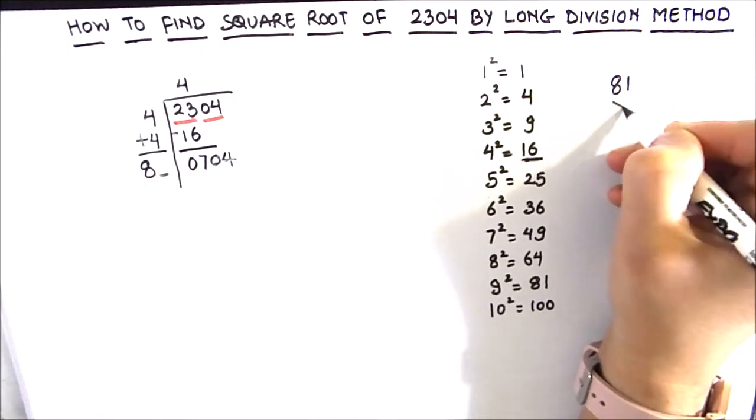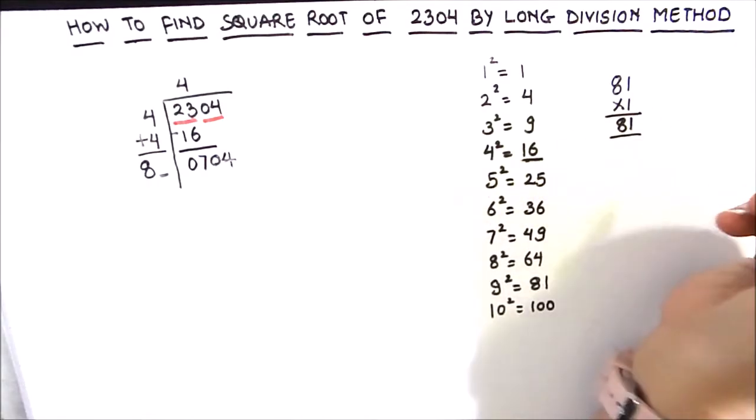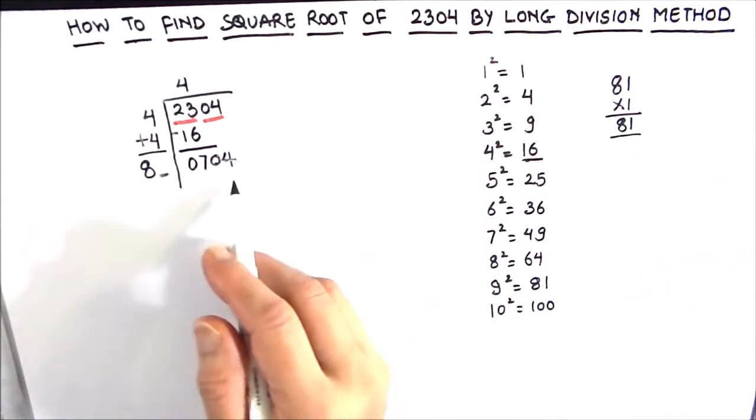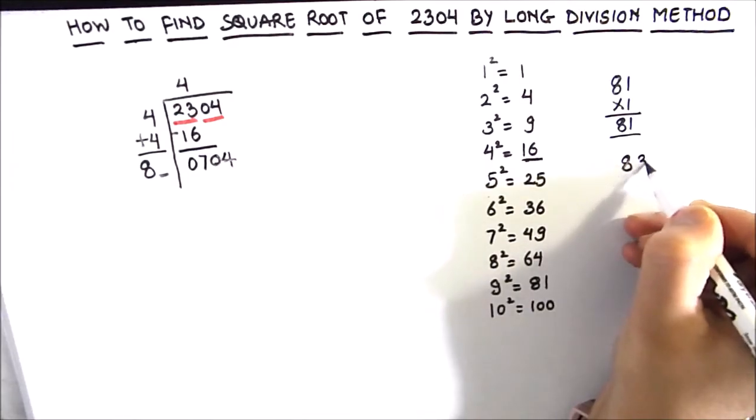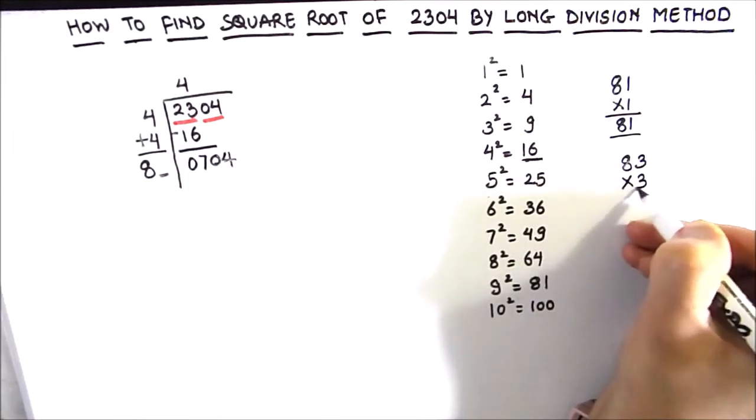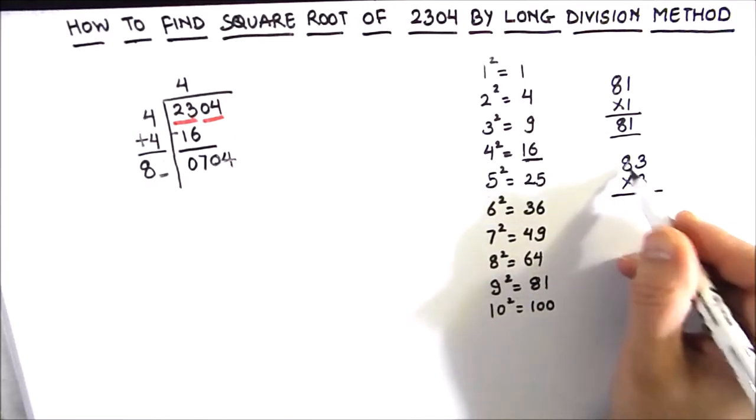If we annex 1 then we need to multiply it by 1. 81 times 1 will be 81 which is way less than 704. Now let us annex 3 here. So 83 times 3, so 3 times 3 is 9, 3 times 8 is 24. So this comes out to be 249 which is way less than 704.